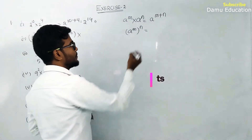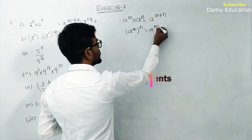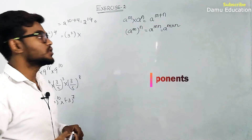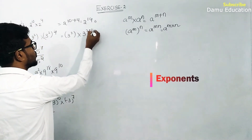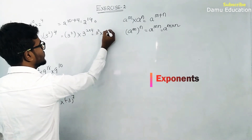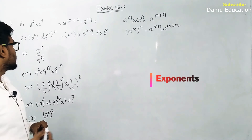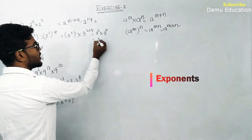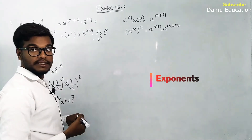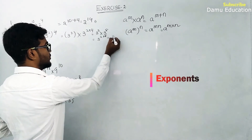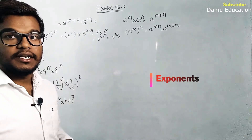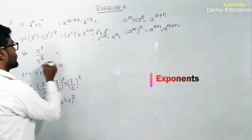The formula a power m whole power n equals a power m into n. So 3 power 2 into 4 gives 3 power 8. Then 3 square into 3 power 8: adding powers gives 3 power 2 plus 8, which equals 3 power 10.